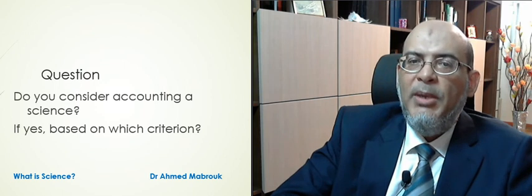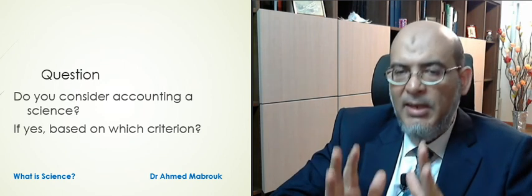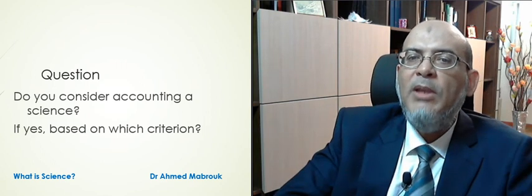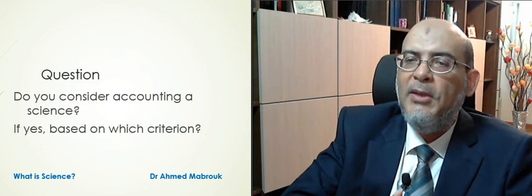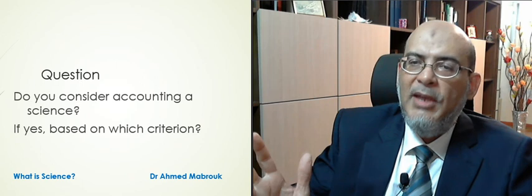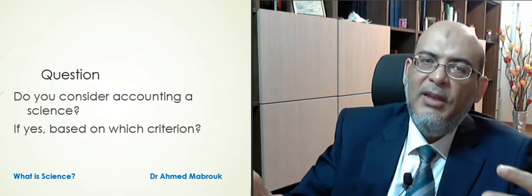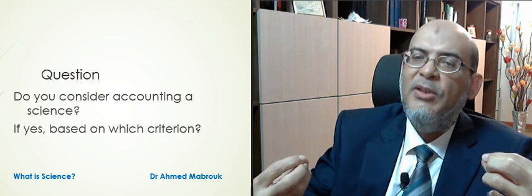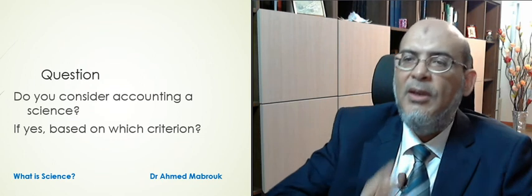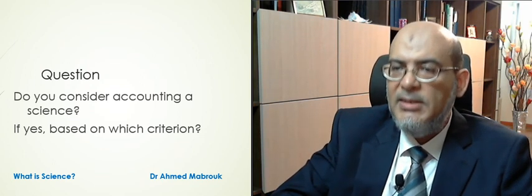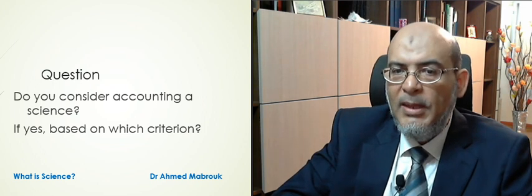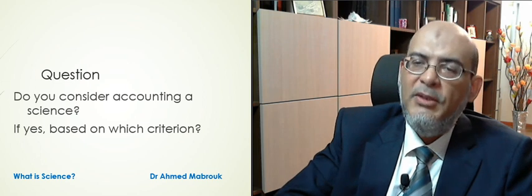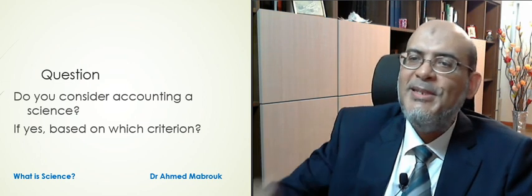We end this session by asking a question. We qualified a discipline as science based on the fact that it studies a phenomenon and analyzes it in an objective way. But what about a discipline like accounting? Accounting doesn't study any phenomenon — it is a way of recording financial data, and based on this recording we can come up with useful indicators about financial activity. So would you qualify accounting as a science? If you think yes, tell us why and based on which criteria — please put your input in the comments. I hope you will continue with me in the next session.